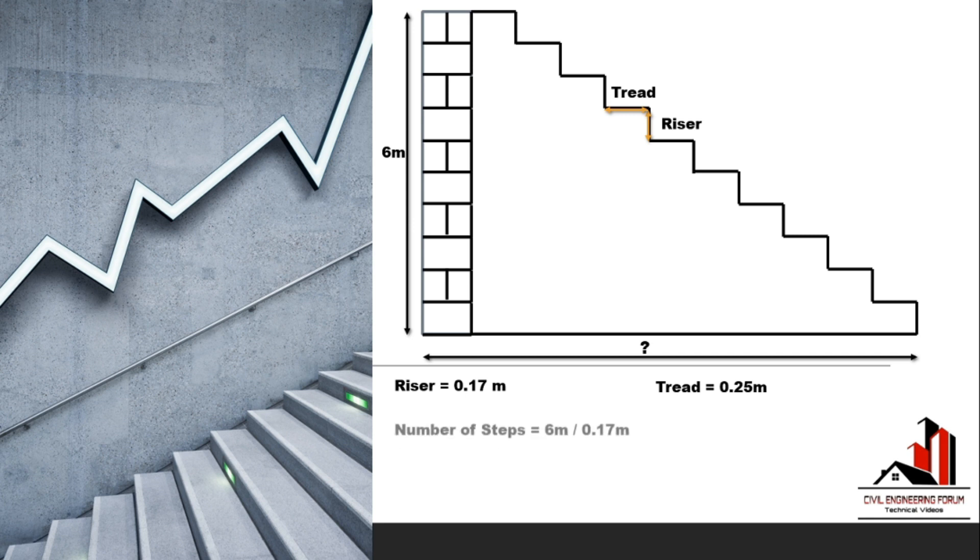To find the number of steps, we have to divide the total height, that is 6 meters, by the riser height, that is 0.17 meters, and in this way we get 35 steps.